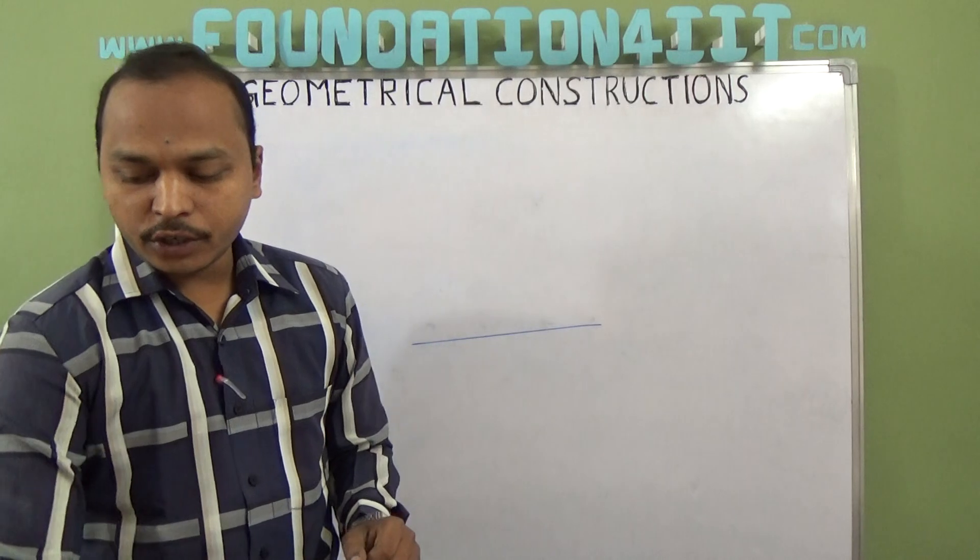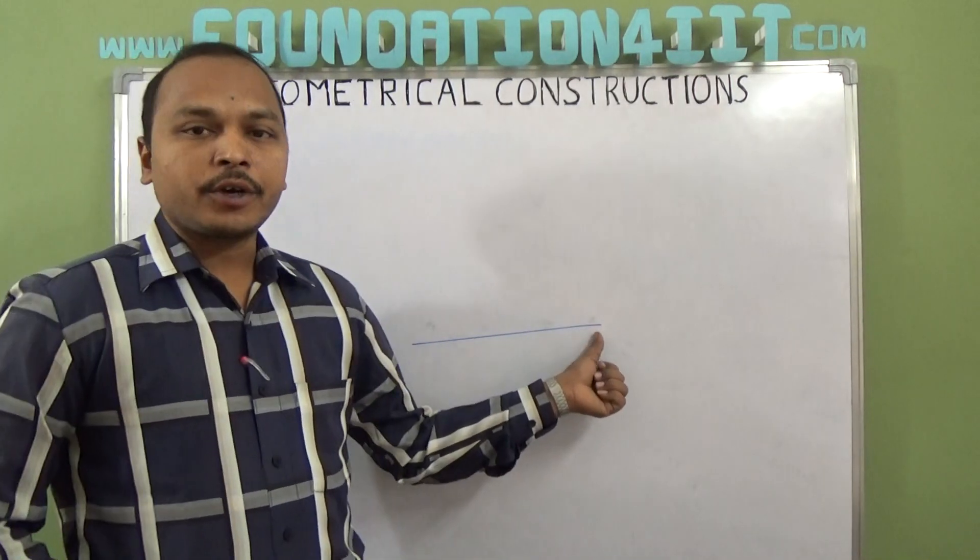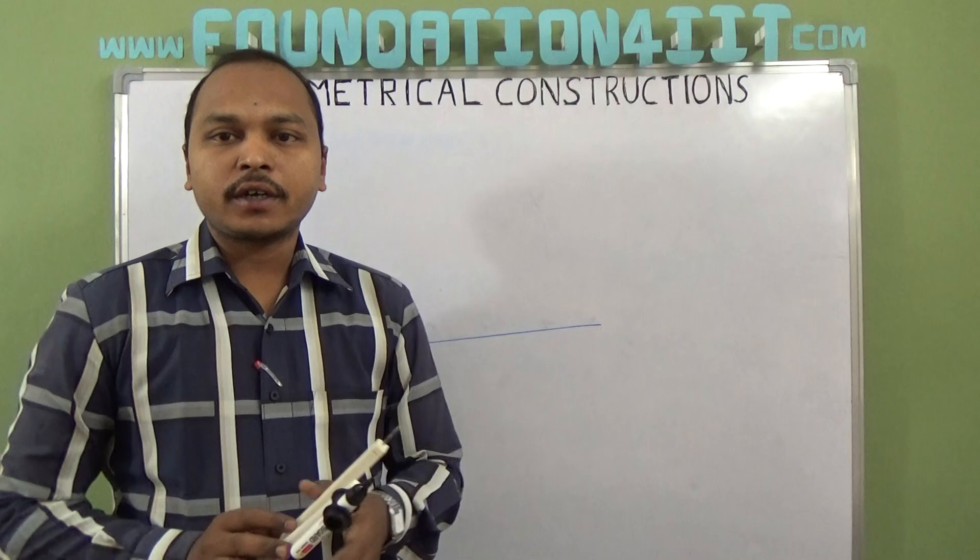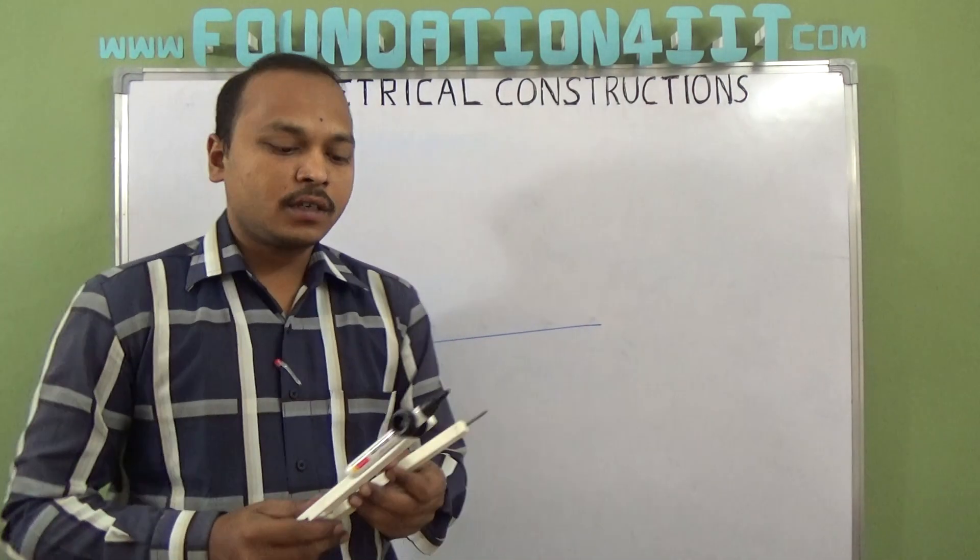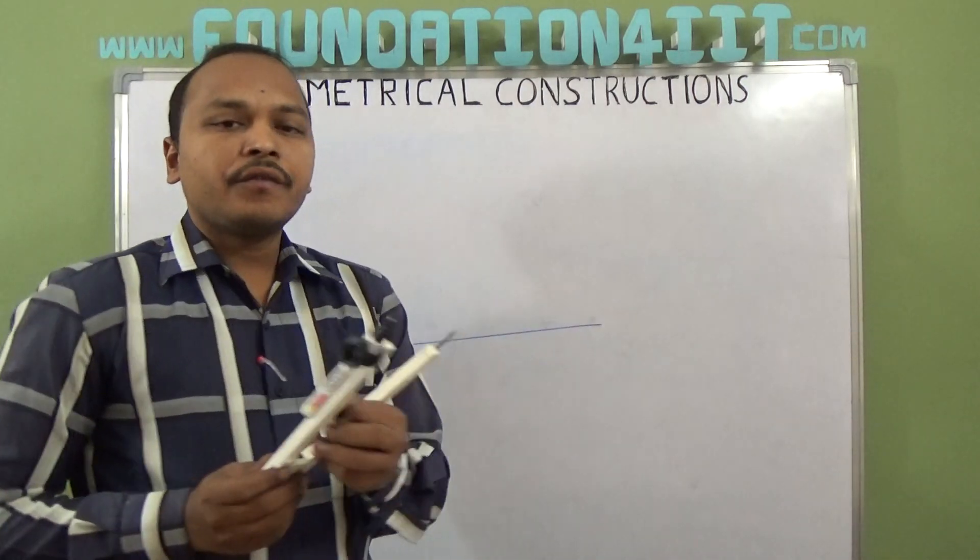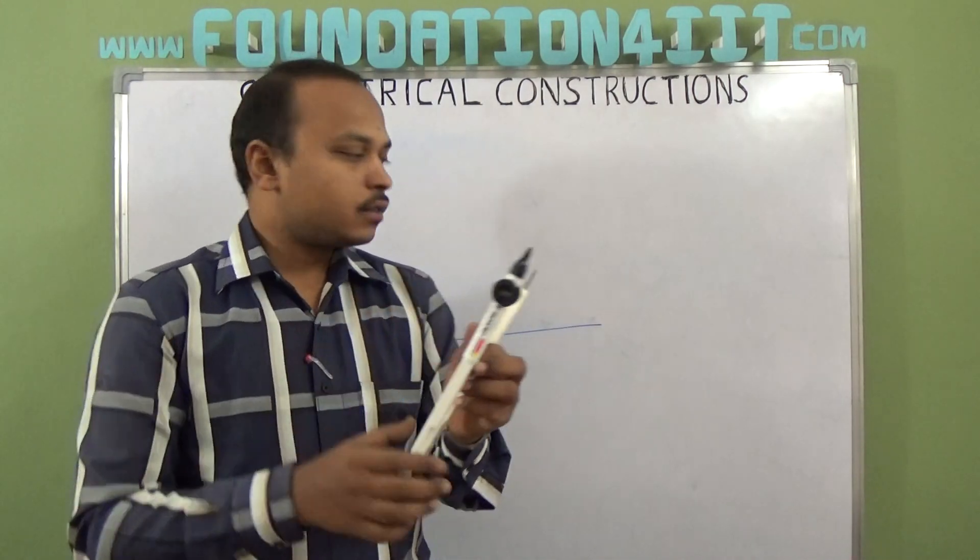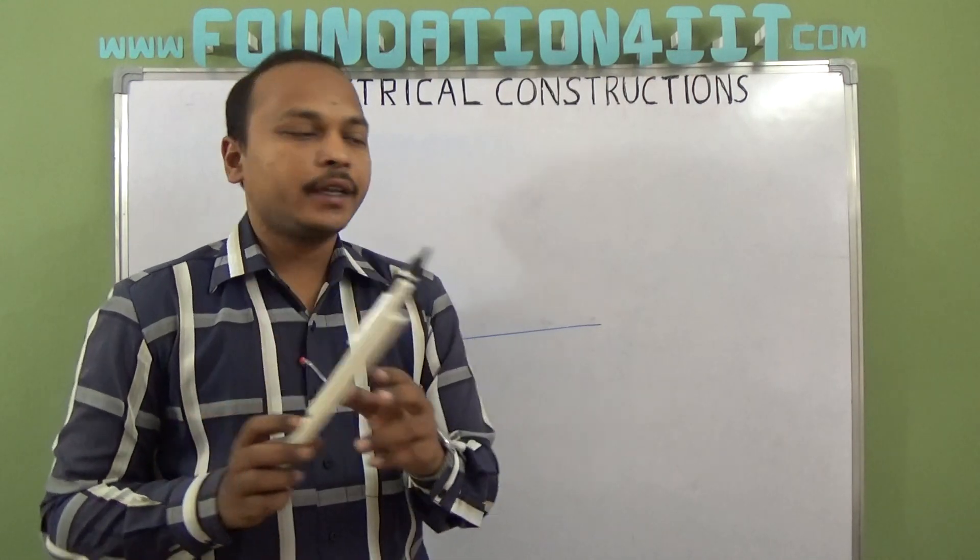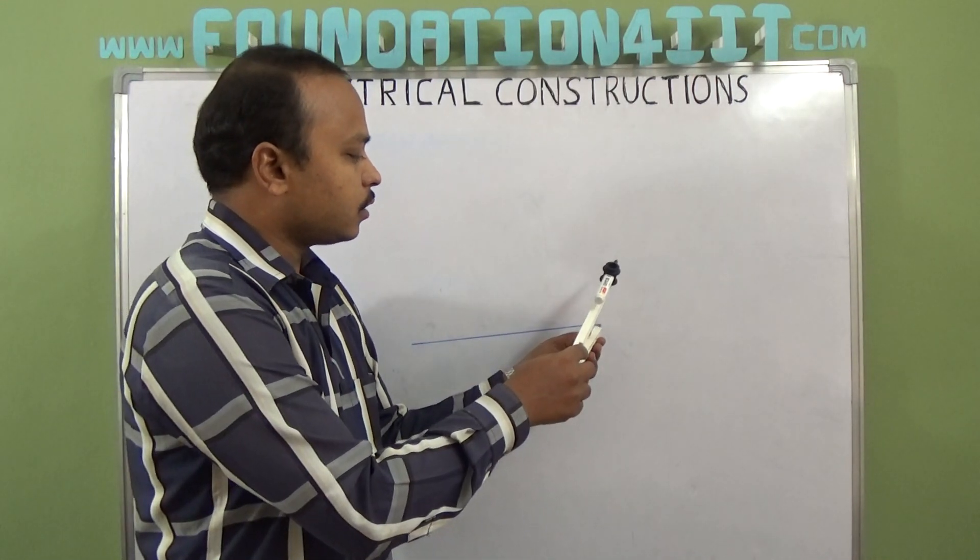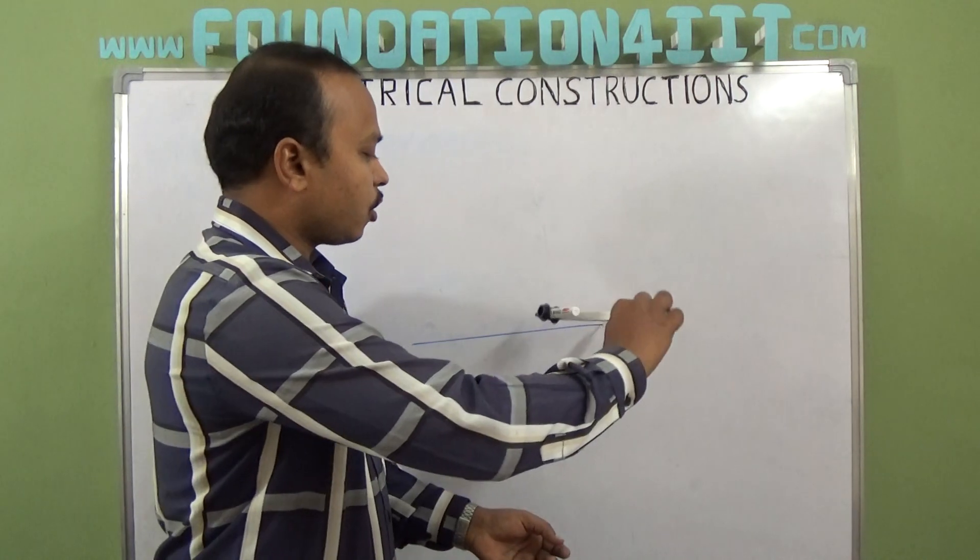From this point, any point this side or anywhere you can construct 90 degrees. I'm going to construct a right side angle 90 degrees. With some reasonable radius, not too small, take some radius. This is the center point and draw an arc.